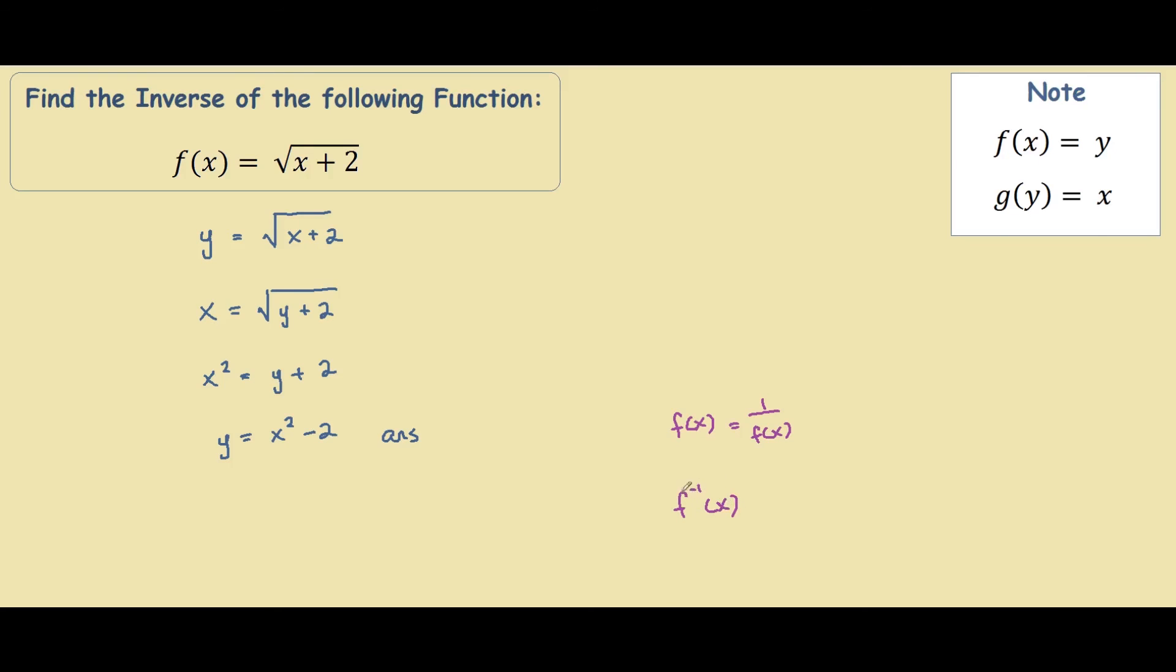And this negative 1 throws people off because from our index laws, we know that we have x to the power of negative 1. This is the same as 1 over x. So remember, this is what we call the reciprocal, and this is what we call the inverse.